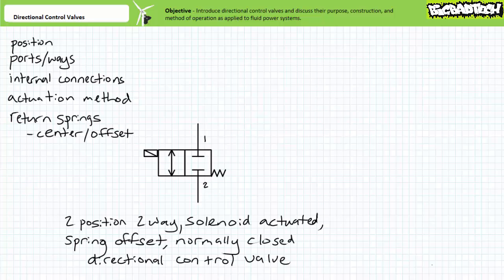The full description of this directional control valve is a two-position, two-way solenoid-actuated spring-offset normally-closed directional control valve. Such a valve can be used to turn on or off, or isolate sections of a larger fluid power system. In the absence of an electrical pilot signal, fluid flow is blocked. In the presence of an electrical pilot signal, fluid can flow.